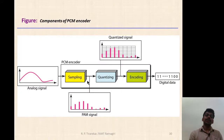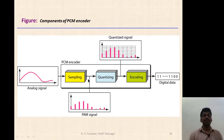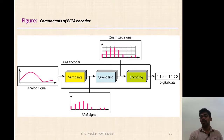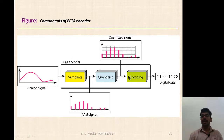The PCM encoder looks like this: the analog signal is applied to the sampler; the sampling output — which may be ideal, natural, or flat-top — is applied to the quantizer; the quantizer produces a fixed number of amplitude levels using quantization; and at the output of encoding we have a binary digital data output.